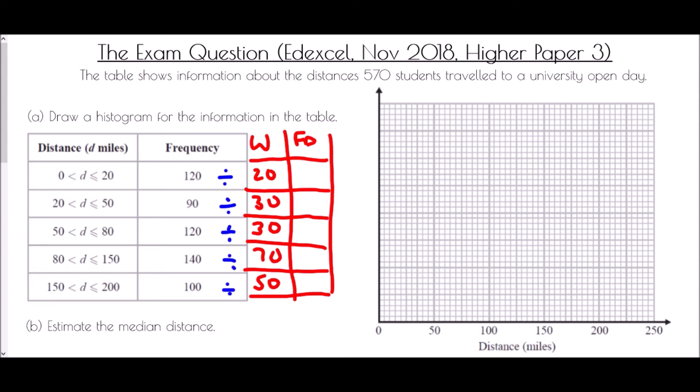So 120 divided by 20 is 6, 90 divided by 30 is 3, 120 divided by 30 is 4, 140 divided by 70 is 2, and 100 divided by 50 is 2.